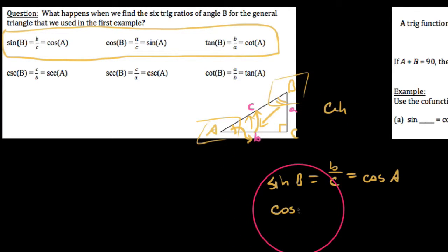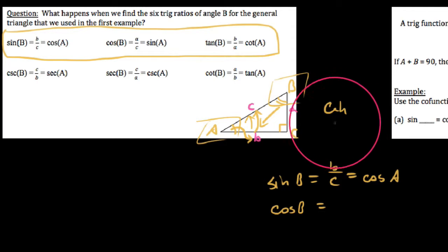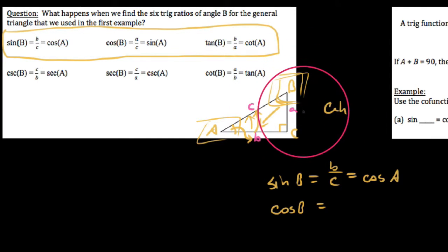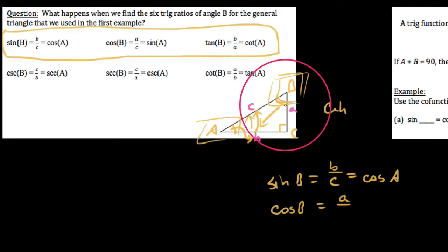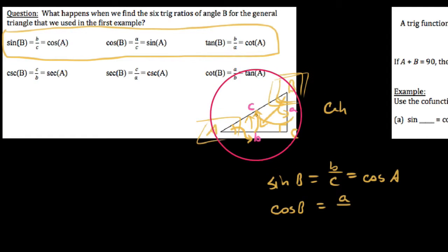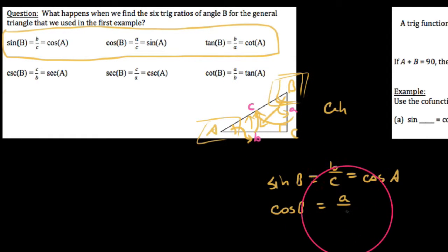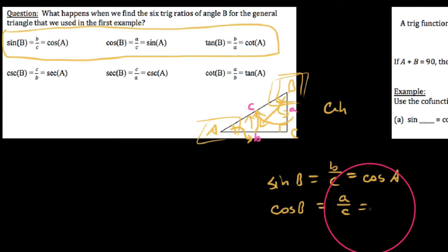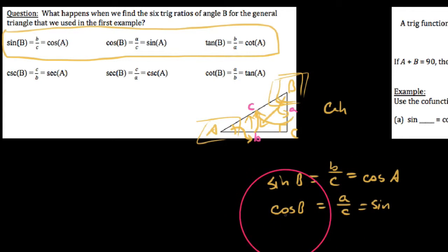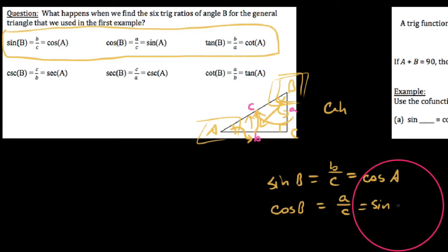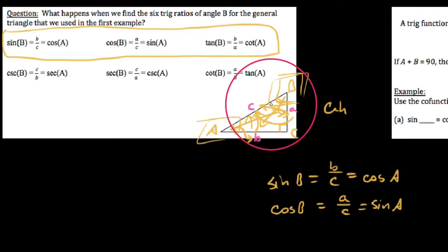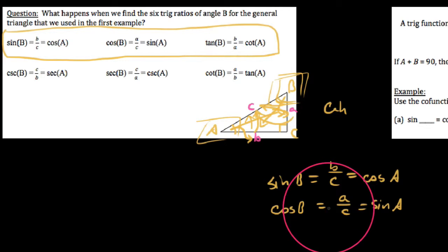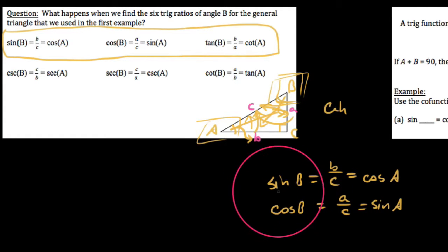Would this work with the cosine of B? The cosine of B is adjacent over hypotenuse. Adjacent to B is leg a, over hypotenuse c. Now if we go do the sine of angle A — opposite over hypotenuse — you can see that we're comparing the same sides. So the sine of one acute angle is the cosine of the other, and vice versa.